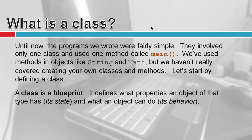Let's start by defining a class. A class is a blueprint. It defines what properties an object of that type has — its state — and what an object can do — its behavior.